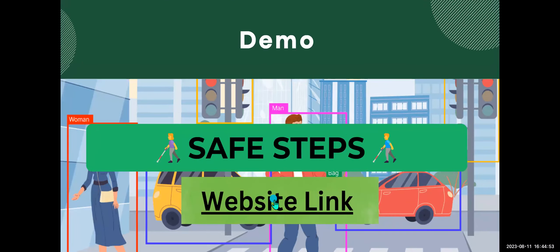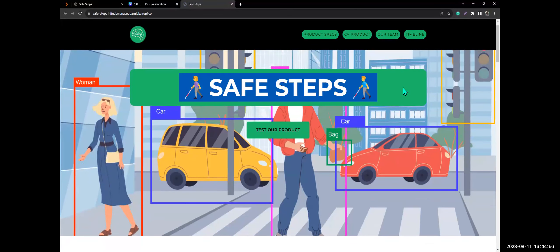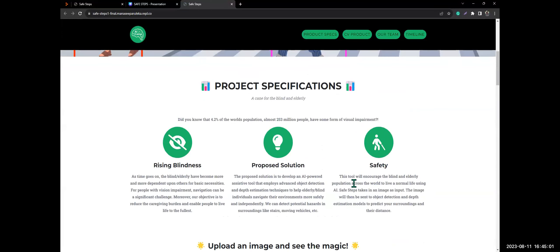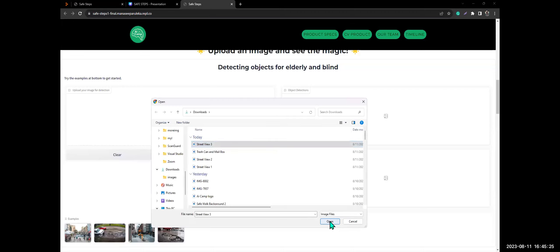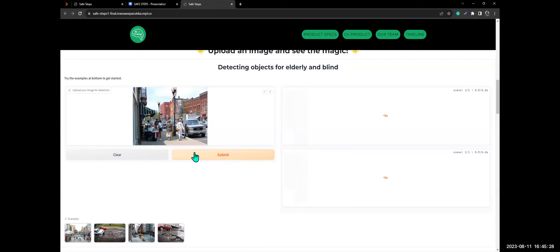Now we will go to our website to test the model. The project is called Safe Steps. Here's our project specifications. We want to help the blind and elderly become more independent, so we used a model that can detect objects and find out their distance from the person. This could signify to the person that an object is near through vibrations or sounds. When we test it, it takes a while, but it should detect objects or people in cars.